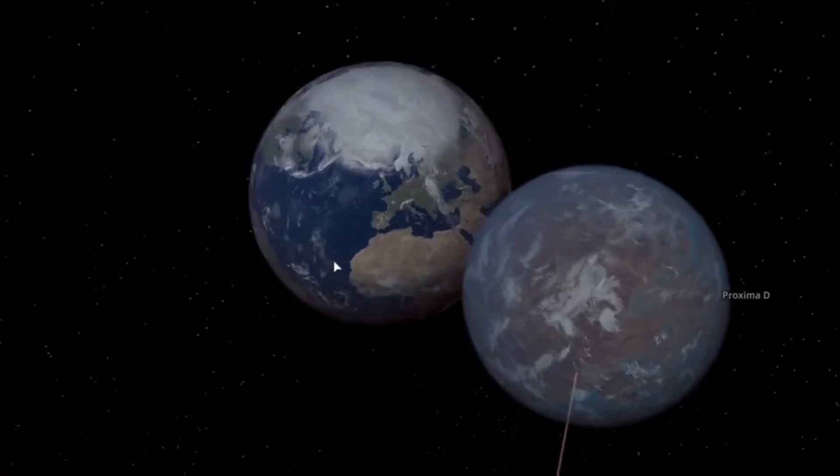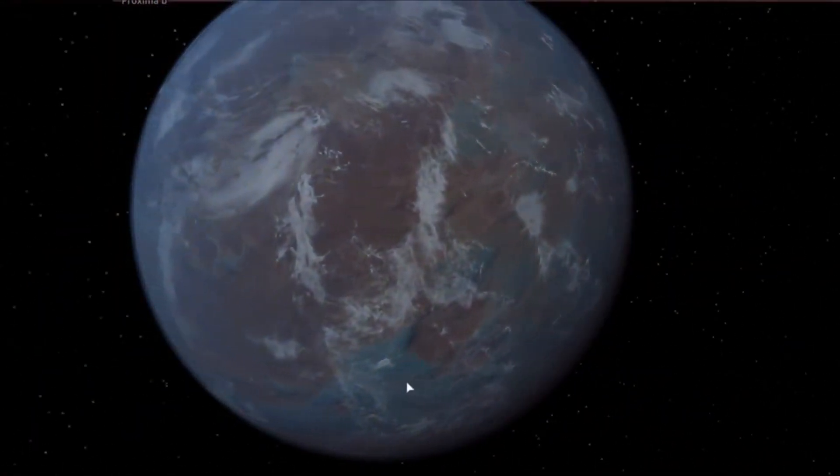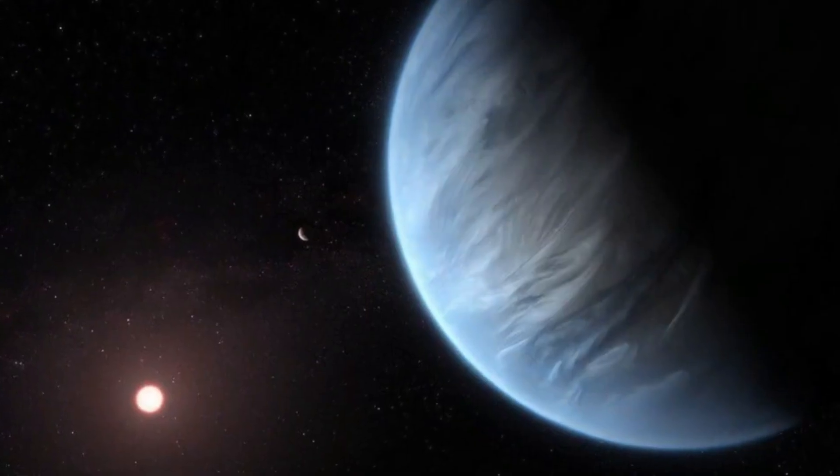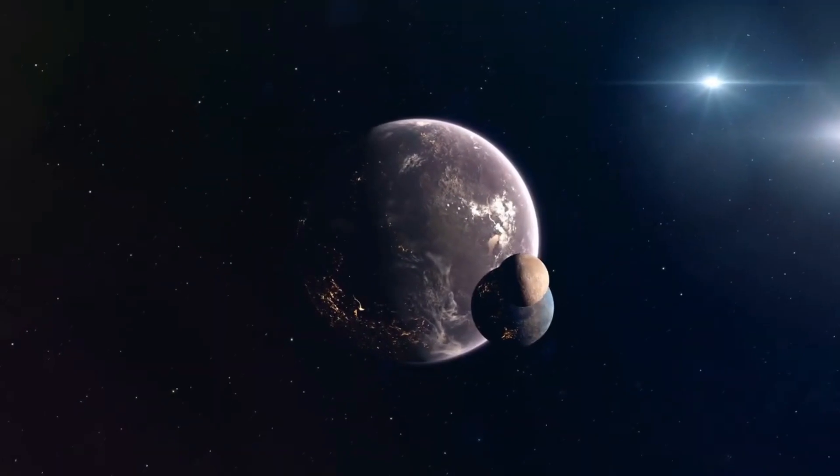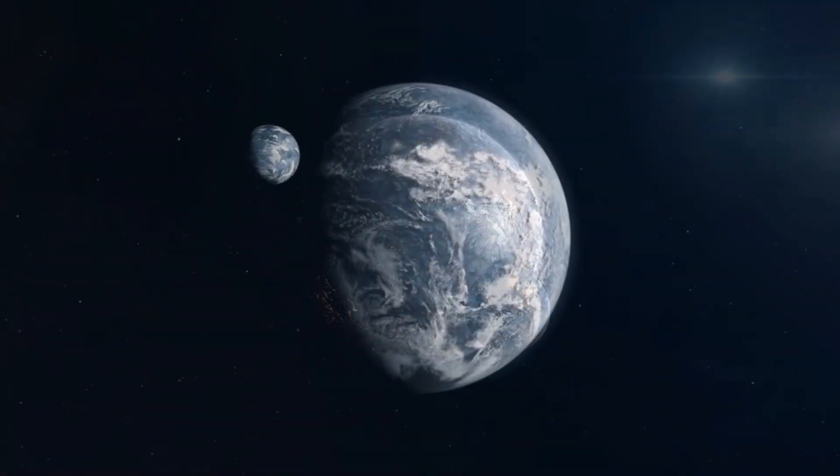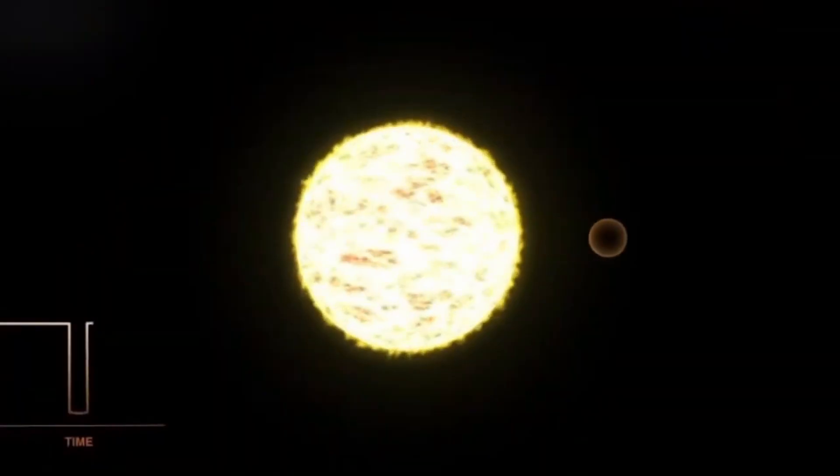Proxima d is one of the lightest exoplanets found to date, at only about one-quarter of the Earth's mass. The newfound planet orbits close to its star at a distance of approximately four million kilometers. That's more than ten times closer to its star than Mercury orbits our own sun, and it completes one orbit in only five days.